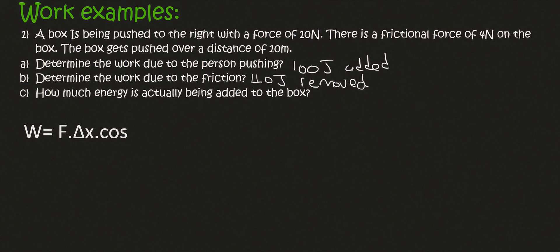Well, if you can see this, we've got 100 joules being added, and then 40 joules is being removed. So therefore, 60 joules is actually being added. So that box will speed up, because more energy is being added than energy being removed. So this is called your net work. Net means overall.